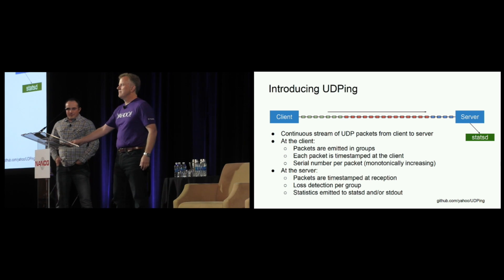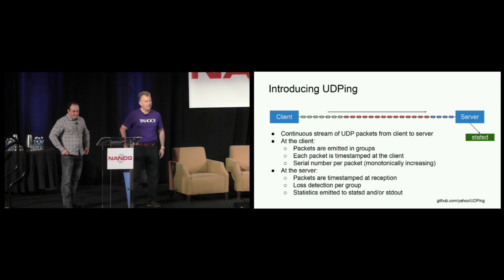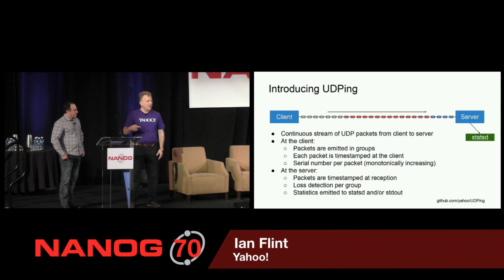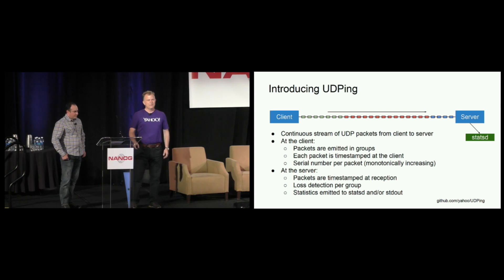What we built to solve this problem is something we're calling UDPing. UDPing is an evolution of the one-way active management protocol. It sends a stream of UDP packets from a client to a server. The packets are emitted in groups, and each packet is timestamped at the client. We pick it up at the server and check the timestamp to determine latency. We put a monotonically increasing serial number on every packet so we can detect packet loss by taking the difference between the last and first packet in the group and subtracting the number of packets received. So if the first and last packets are 20 apart and we receive 19, we know we lost a packet.